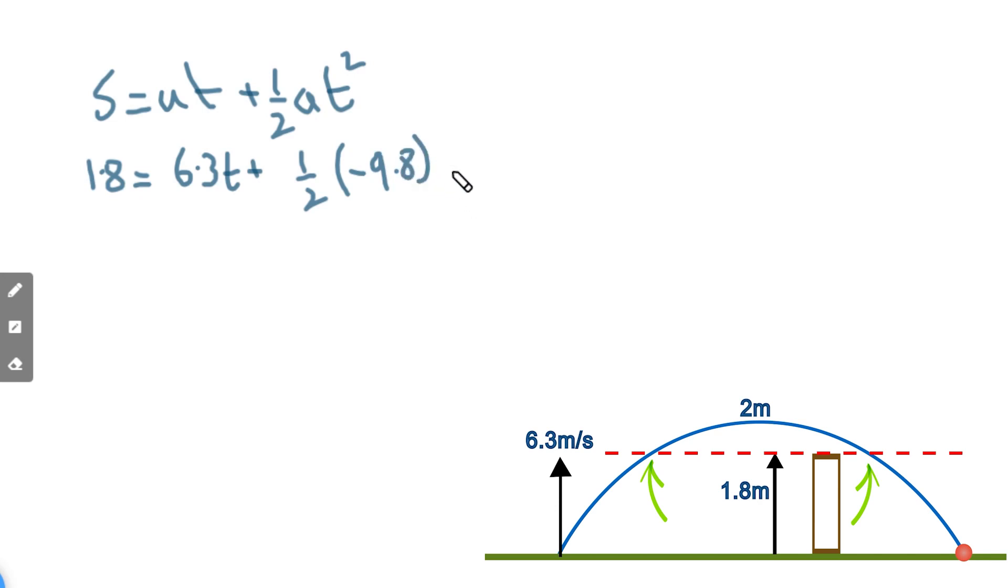we've made the displacement upwards, gravity of course is downwards, t squared. Right, so we can rearrange this. Now we're going to get 1.8 equals 6.3t minus 4.9t squared. Well in order to solve that we need to